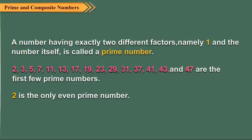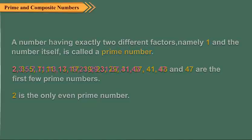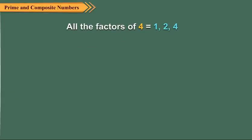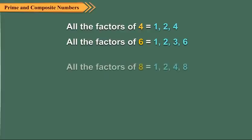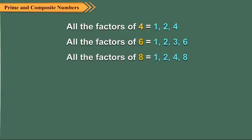Now observe the following. All the factors of 4 are 1, 2, 3 and 4. All the factors of 6 are 1, 2, 3 and 6. All the factors of 8 are 1, 2, 4 and 8. All the factors of 9 are 1, 3 and 9.